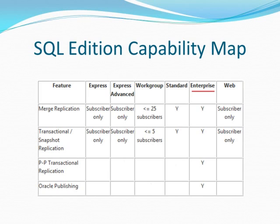There's a big SQL edition capability map that Microsoft has — I simplified it a bit. The enterprise features are peer-to-peer transactional replication and working with Oracle publishing. Your lower versions, the free stuff, can basically only be a subscriber. That's kind of cool — like a manufacturing plant with a small data set, or small point-of-sale systems, you can have a free version of SQL getting that data. So it's pretty cool that you can do that. Your typical setup is just standard edition as subscriber.